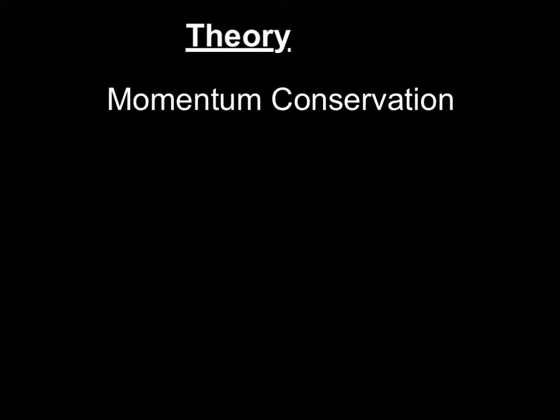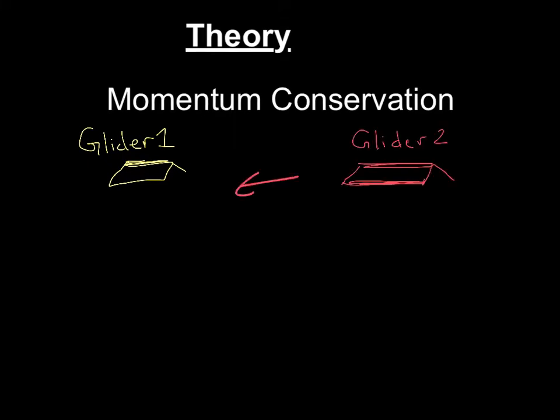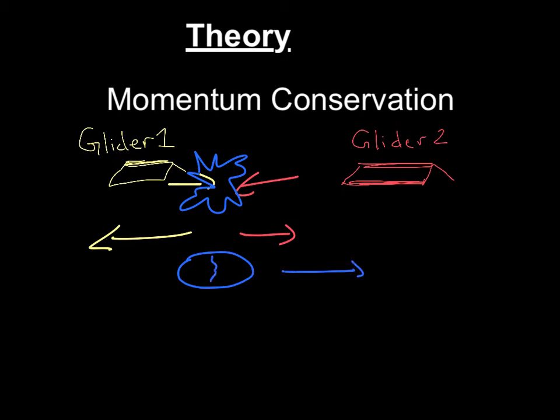If you remember from class, we talked about how momentum is conserved if there's no external forces. In this case, your system is going to consist of two carts, one cart over here, one cart over here, and they're going to come at each other, and in the middle they're going to collide. Depending on if you're in an elastic or inelastic collision, they will bounce back or they will form one big super blob and go some direction.